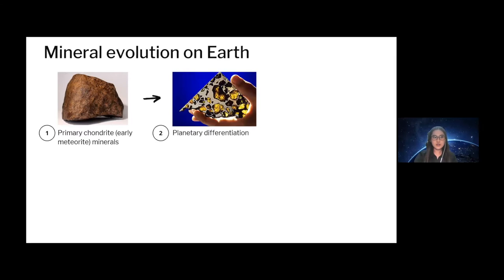Stage 2 consists of subsequent shocks and thermal alteration of chondrites and planetesimal differentiation. The formation of achondrites from partial melting of the chondrites led to the formation of approximately 260 minerals found in unweathered lunar and meteorite samples.